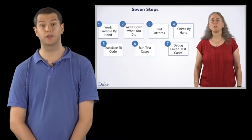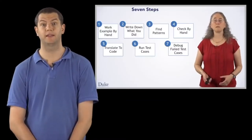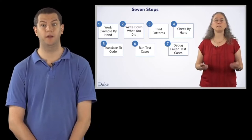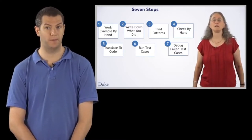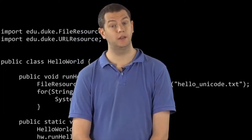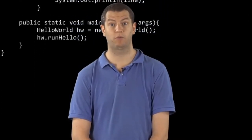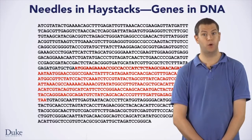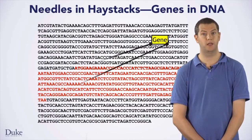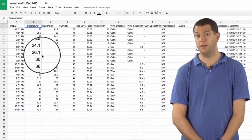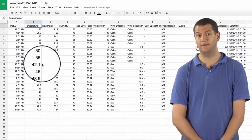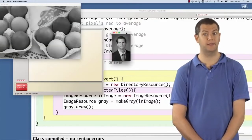In this course you will learn a seven-step process designed to help you understand how to approach any programming problem. You'll use this process to solve real problems, and you'll learn that computer science is so much more than the syntax of a programming language like Java. You'll have a chance to work on problems such as analyzing DNA, manipulating CSV files, and processing images.